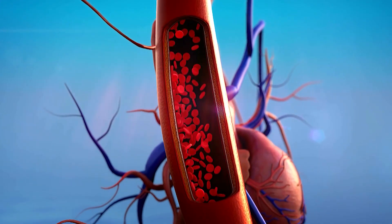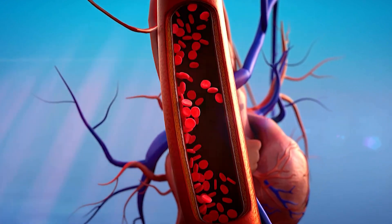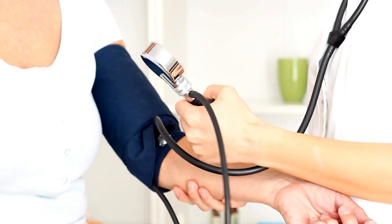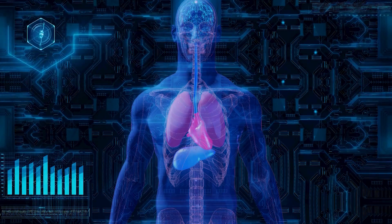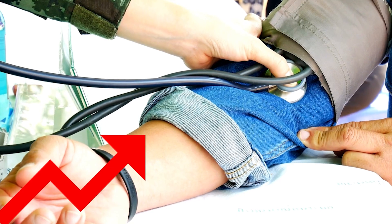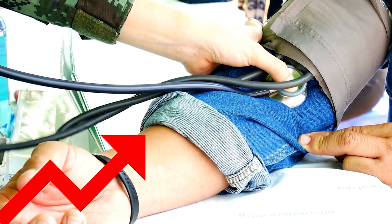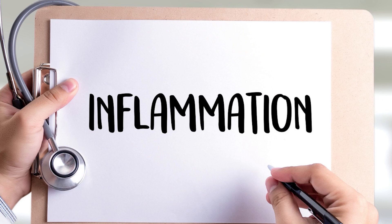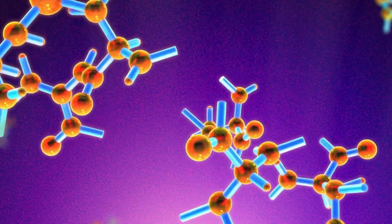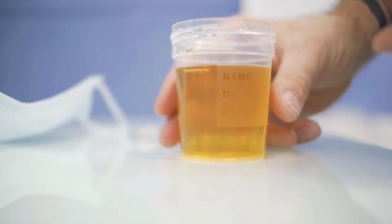Angiotensin causes blood vessel constriction, which increases blood pressure. It causes our body to retain sodium, which affects our electrolytes and again increases blood pressure, and also contributes to inflammation and protein loss in the urine.